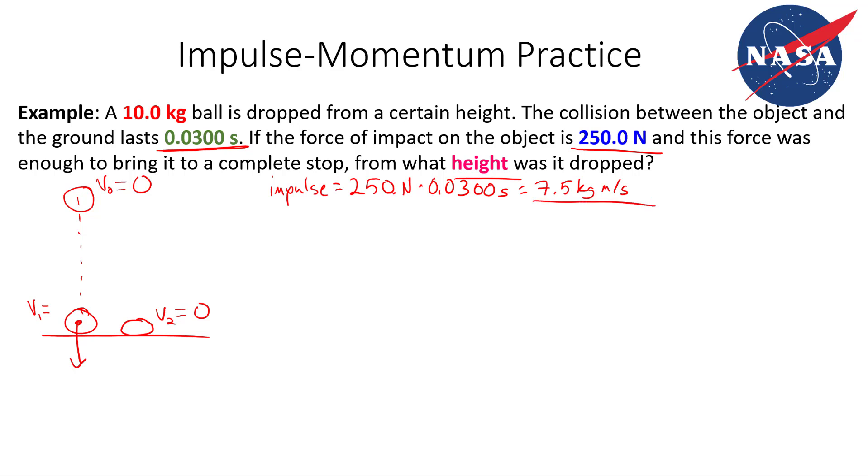If we want to find our change in velocity, we can use impulse momentum theorem. Change in momentum is equal to impulse, so M delta V is equal to impulse. If we want to solve for delta V, we divide both sides by M. We get delta V is impulse, which is 7.5 kilogram meters per second, over the mass, 10.0 kilograms, which means 7.5 over 10 is just 0.75 meters per second.